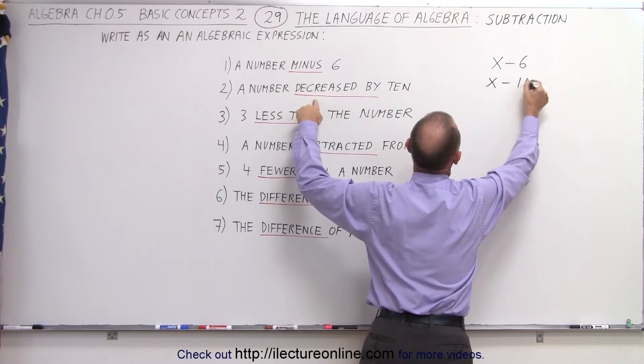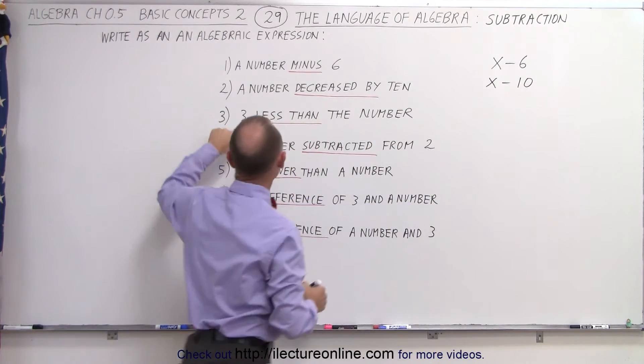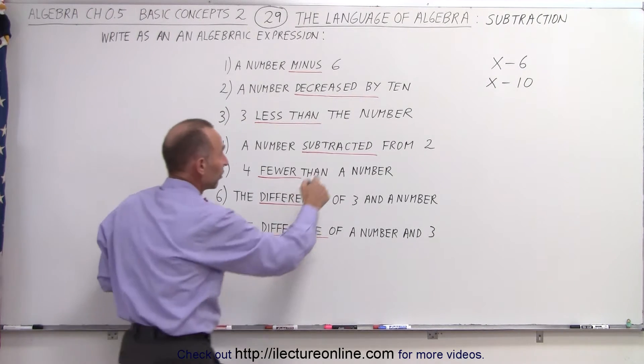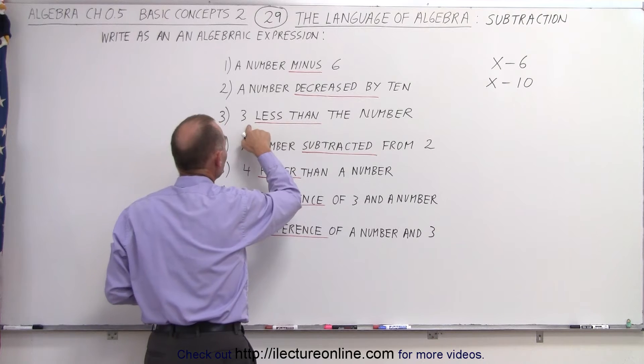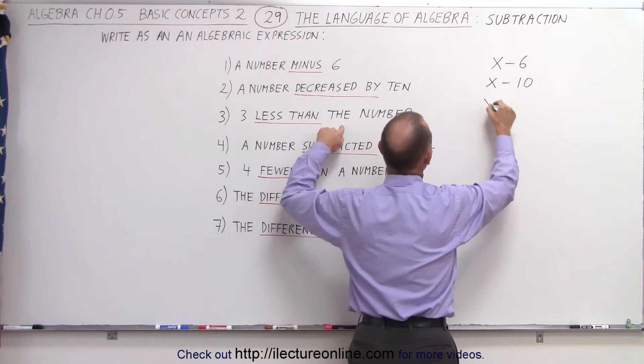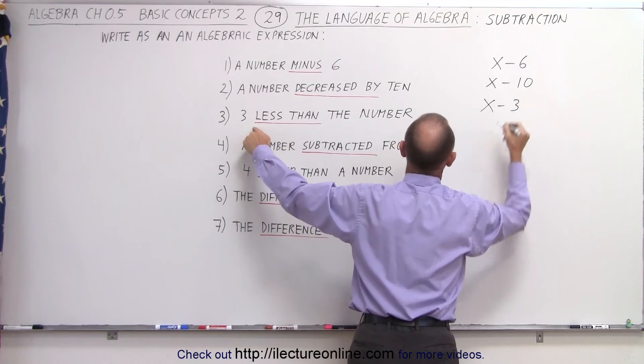The next one says 3 less than the number. Again, the number is represented by x, and then 3 less means we're going to subtract 3 from that. So the number x and then 3 less means minus 3.